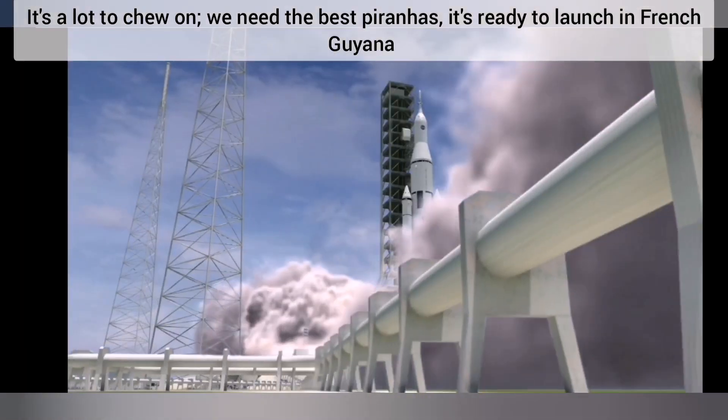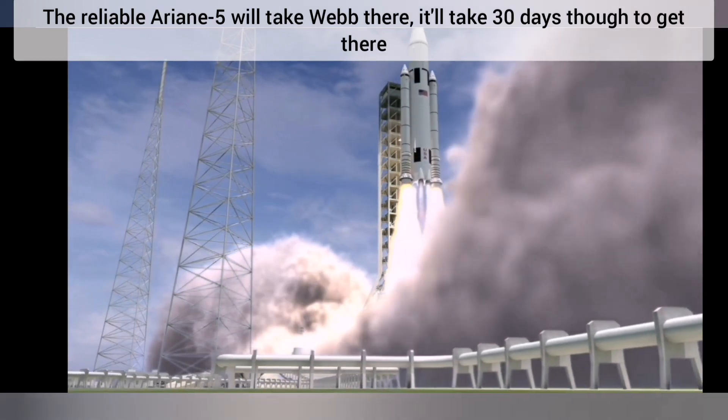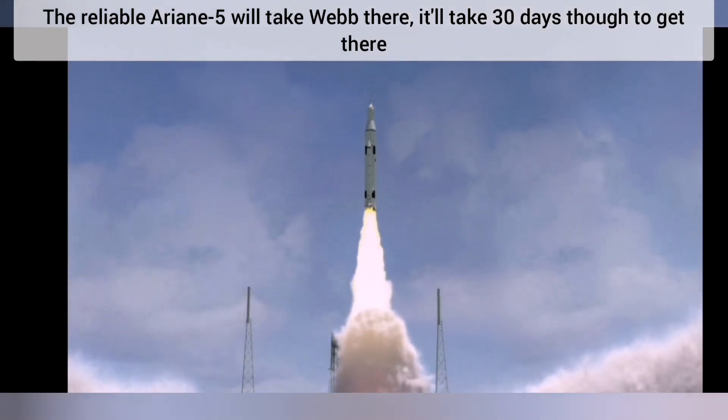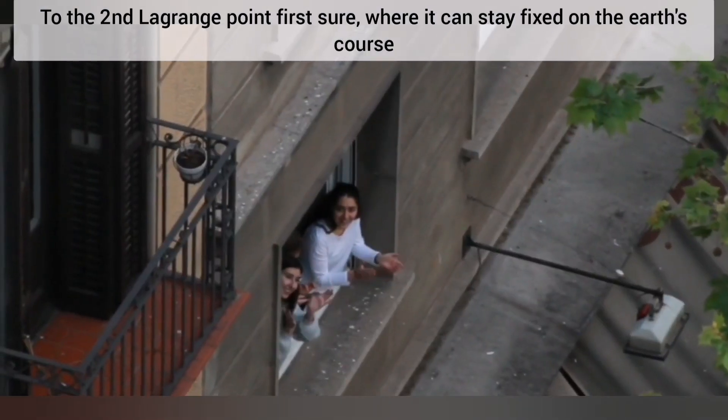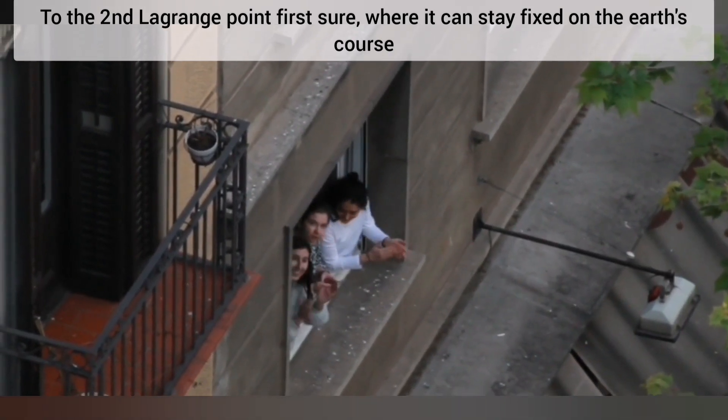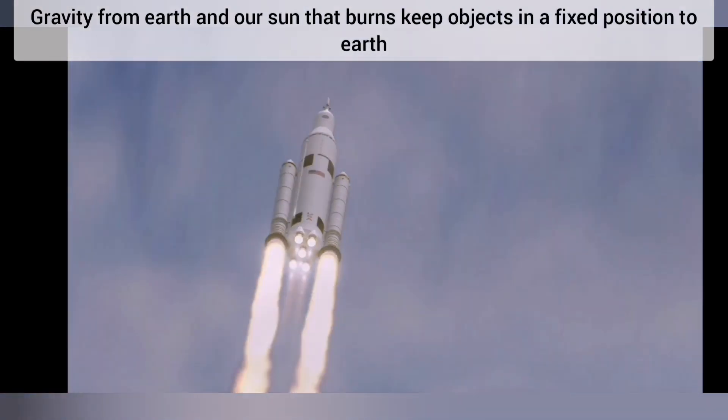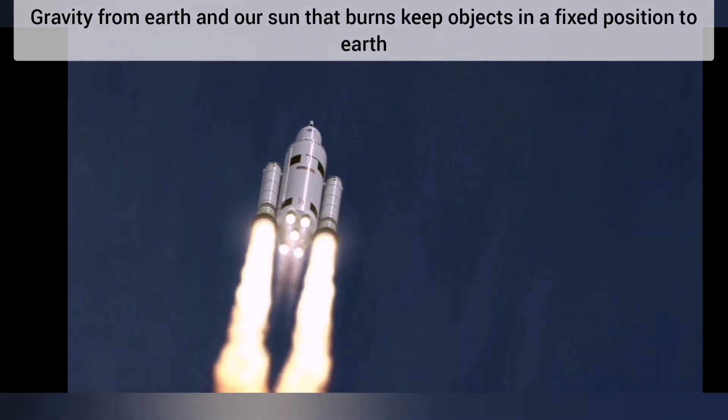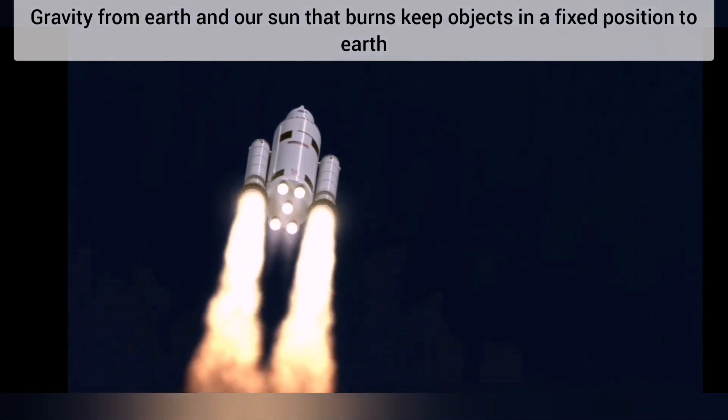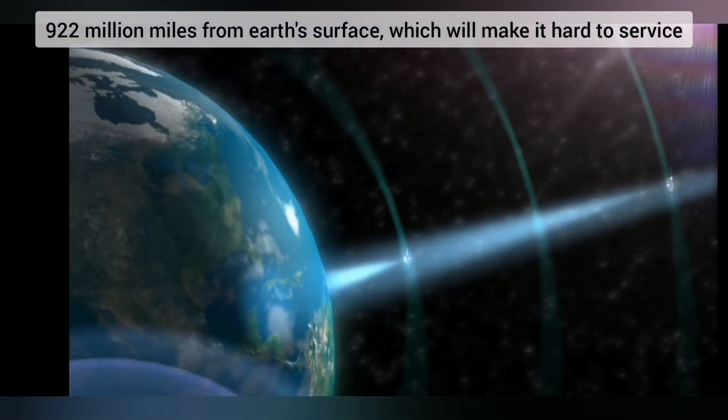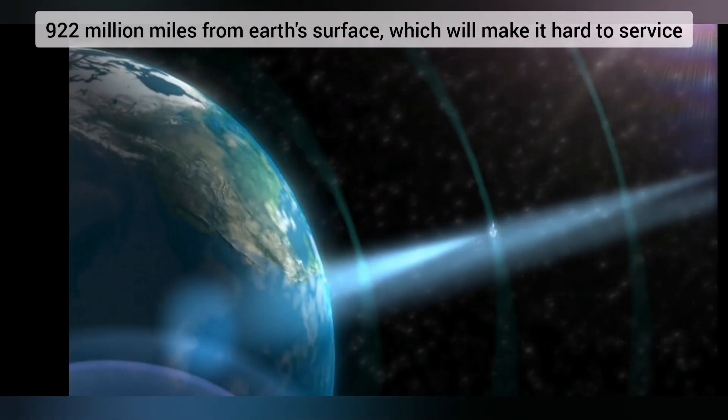It's ready to launch in French Guiana. The reliable Ariane 5 will take Webb there. It'll take 30 days though to get there, to the second Lagrange point for sure, where it can stay fixed on the earth's course. Gravity from earth and our sun that burns keeps objects in a fixed position to earth. 922,000 miles from the earth's surface, which will make it hard to service.